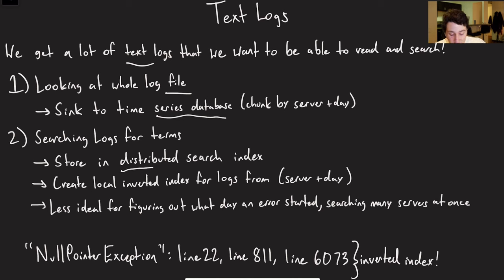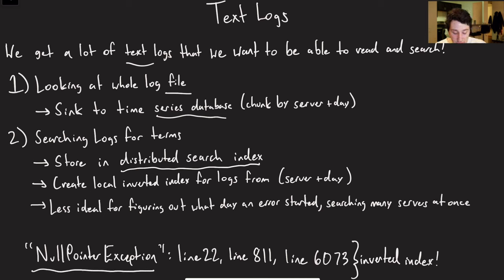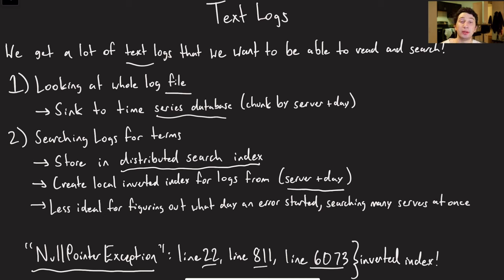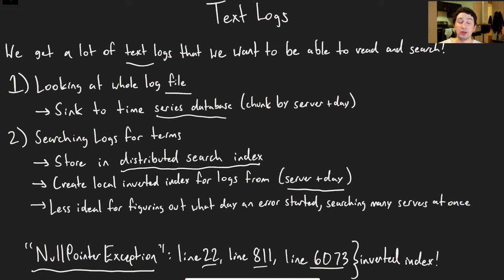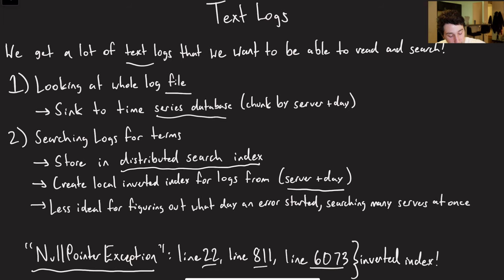If there are enough logs, we can store them in a distributed search index using something like an inverted index, where you take a key term someone might search for and provide all the line IDs in the log that are relevant. We want to make sure that within one server's logs and within the run of that server, they're on the same partition of the inverted index for fast searching. The downside is that searching historical logs across multiple days may require querying 10 different partitions. Ideally you can fit more than one day into a single partition, but if not you'll run a distributed query and aggregate the results.